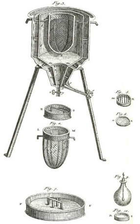A calorimeter is an object used for calorimetry, or the process of measuring the heat of chemical reactions or physical changes as well as heat capacity. Differential scanning calorimeters, isothermal microcalorimeters, titration calorimeters and accelerated rate calorimeters are among the most common types.